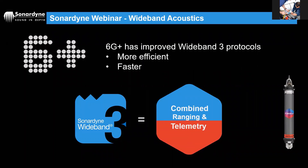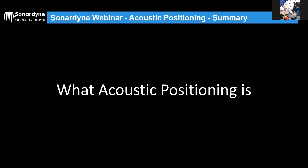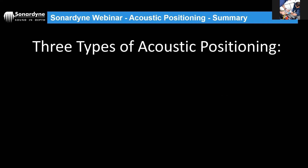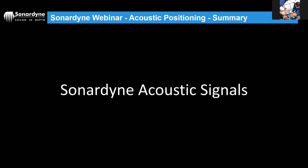To summarize this first webinar: we covered what acoustic positioning is, the three types of acoustic positioning systems — LBL, USBL, and LUSBL — and we discussed sound itself, including the specific acoustic signals used in Sonardyne systems, from early tone-based analog signals through to the sixth generation wideband digital technology.